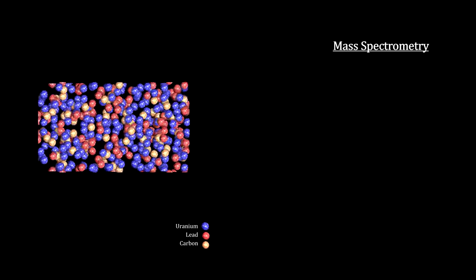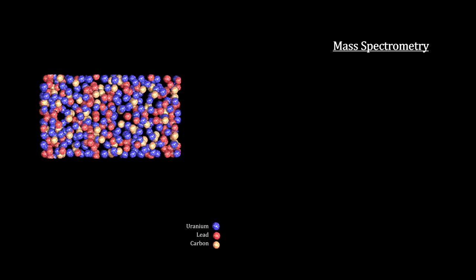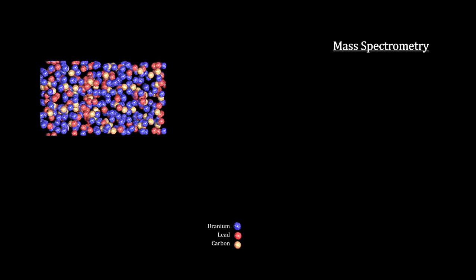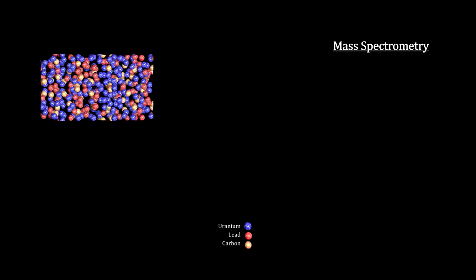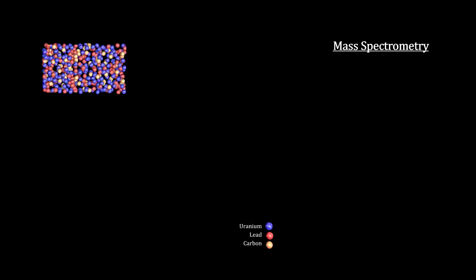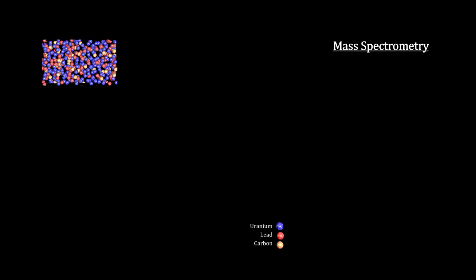The actual measurement of the ratios is done with a mass spectrometer. Like a regular spectrometer breaks light into its constituent parts, a mass spectrometer breaks a mixture of elements with different masses into separate streams for counting.